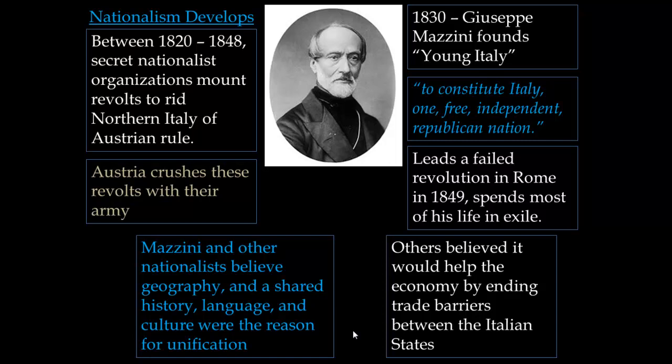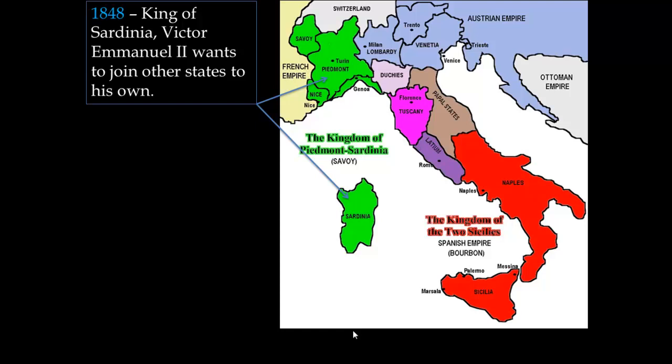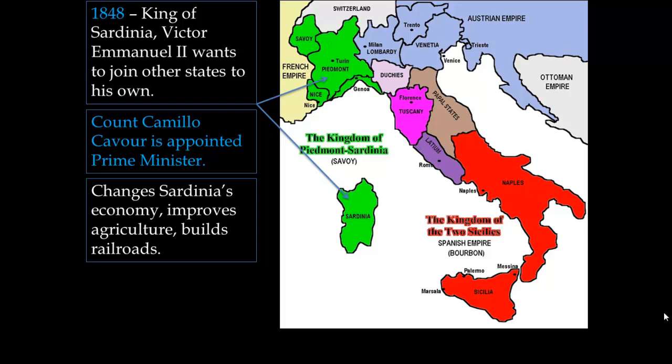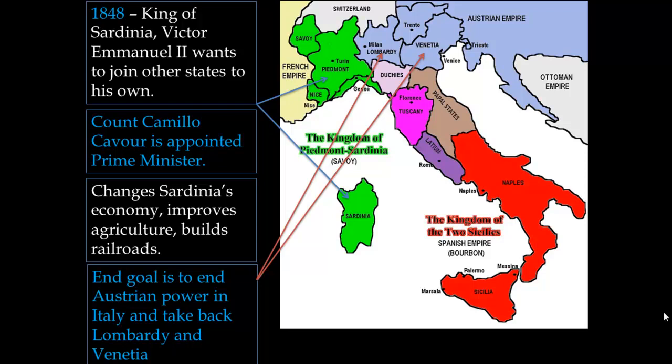In 1848, the king of Sardinia — which includes not only the island but also the region of Piedmont — Victor Emmanuel II, wants to join other states to his own and increase his power. He appoints Count Camillo Cavour as prime minister to run his kingdom. Cavour immediately makes changes, improving Sardinia's economy, improving agriculture, and building railroads. But his end goal is to get rid of Austrian power in Italy and take back the kingdoms of Lombardy and Venetia in northern Italy.